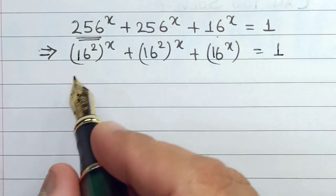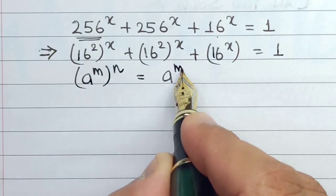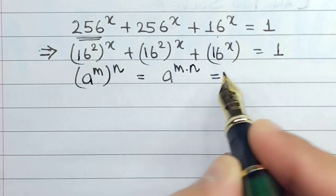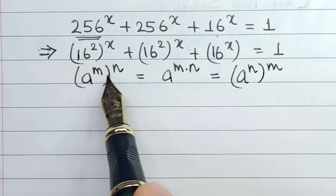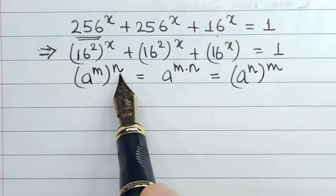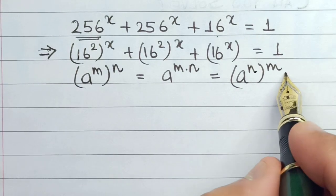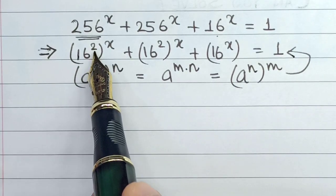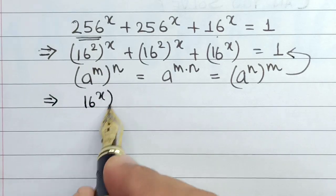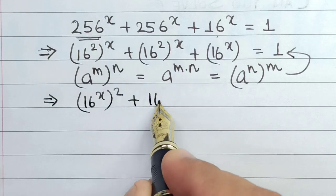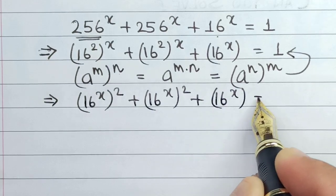Now we have a property in exponents and powers where a to the power m, whole power n, can be written as a to the power m into n. This can also be written as a to the power n whole power m — meaning we can interchange the powers. So I will use this property here and change the positions of 2 and x respectively. This gives us 16 to the power x, whole square, plus 16 to the power x, whole square, plus 16 to the power x, is equals to 1.